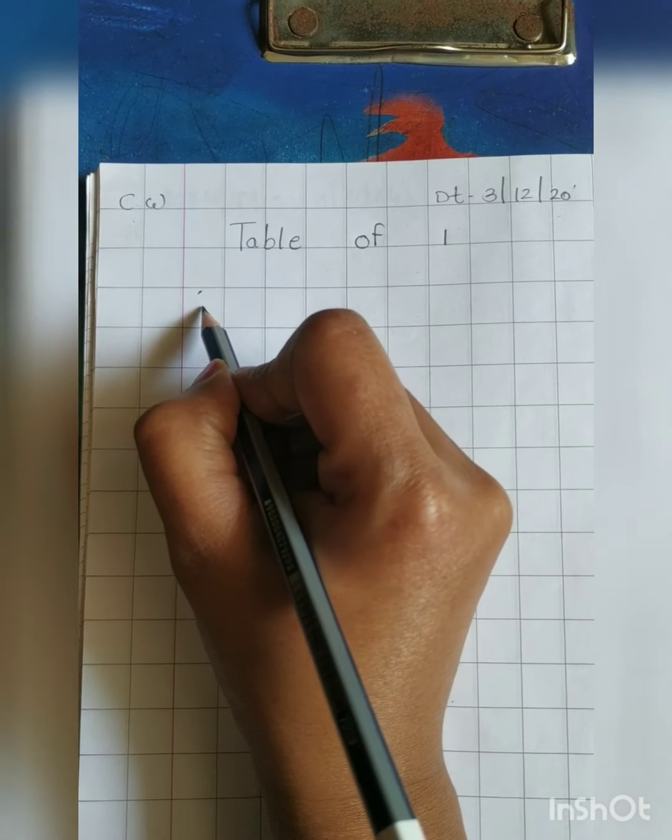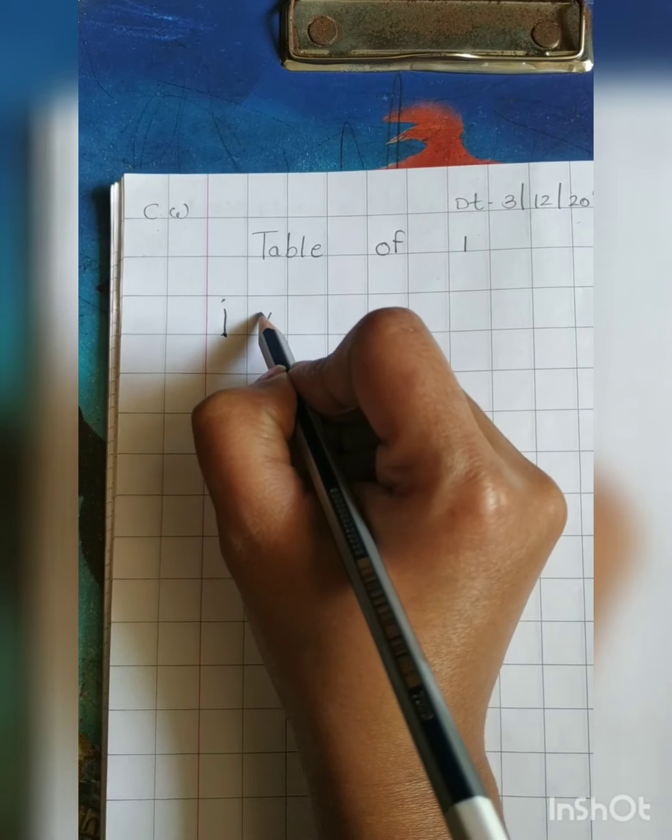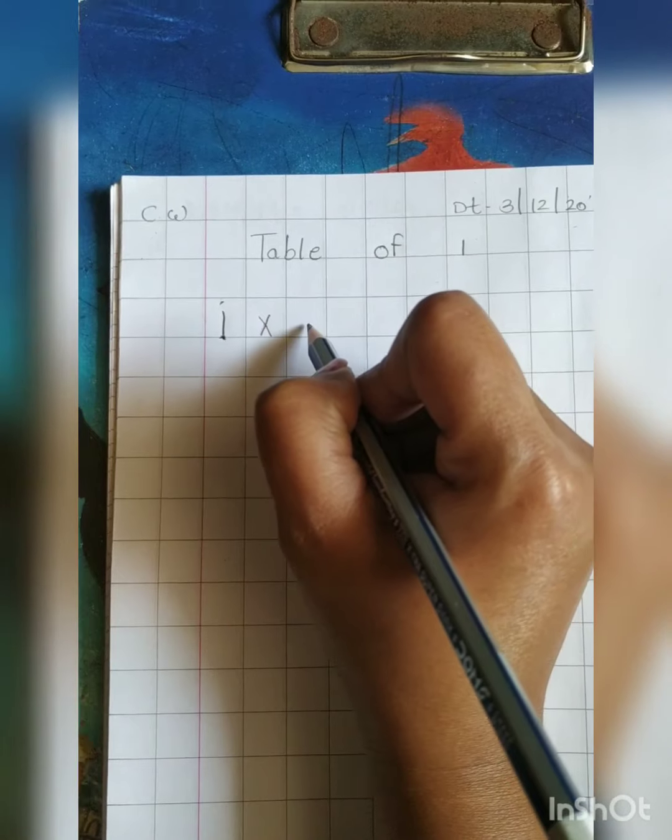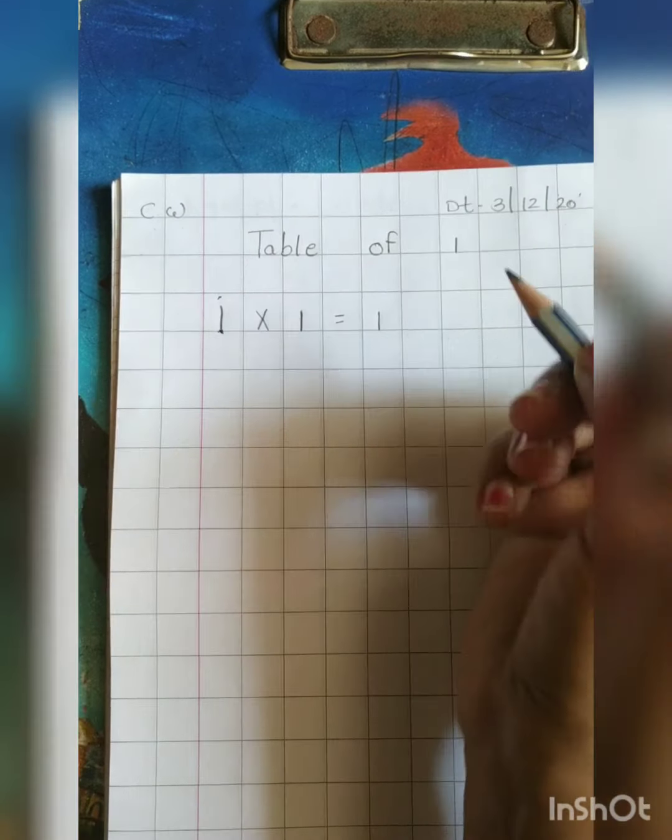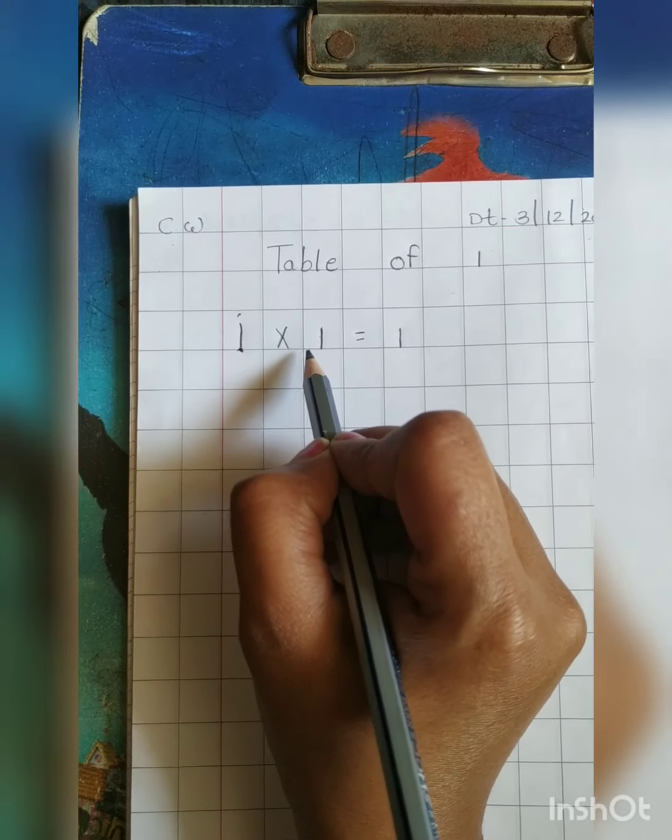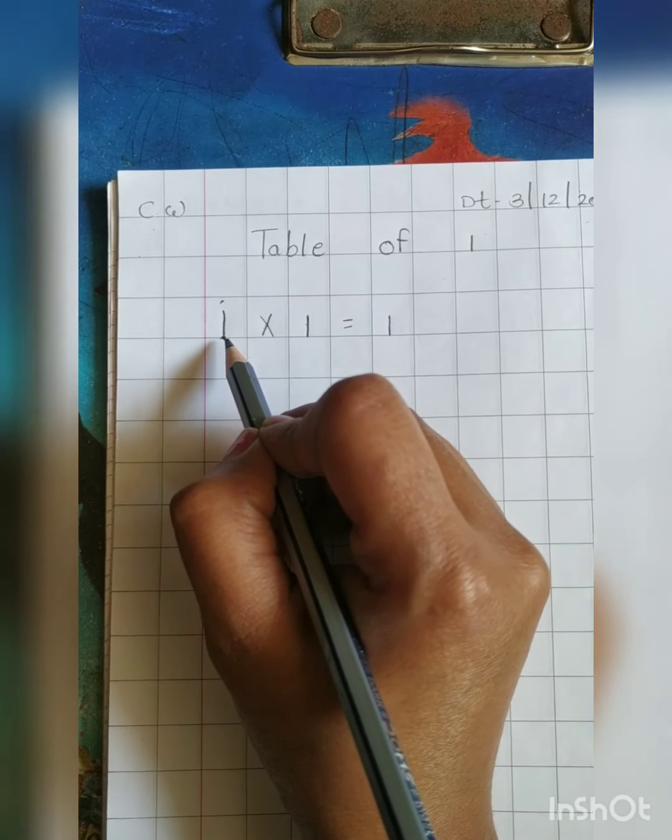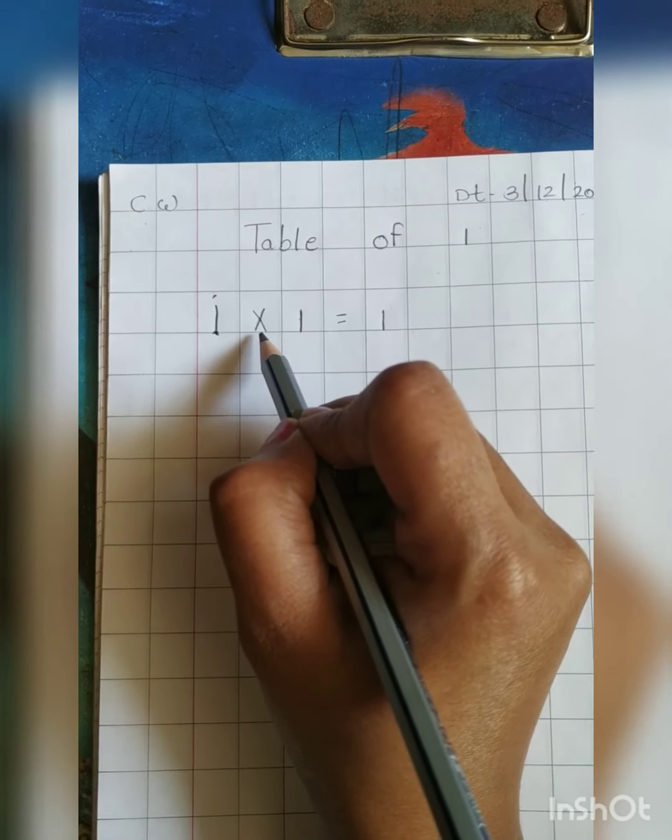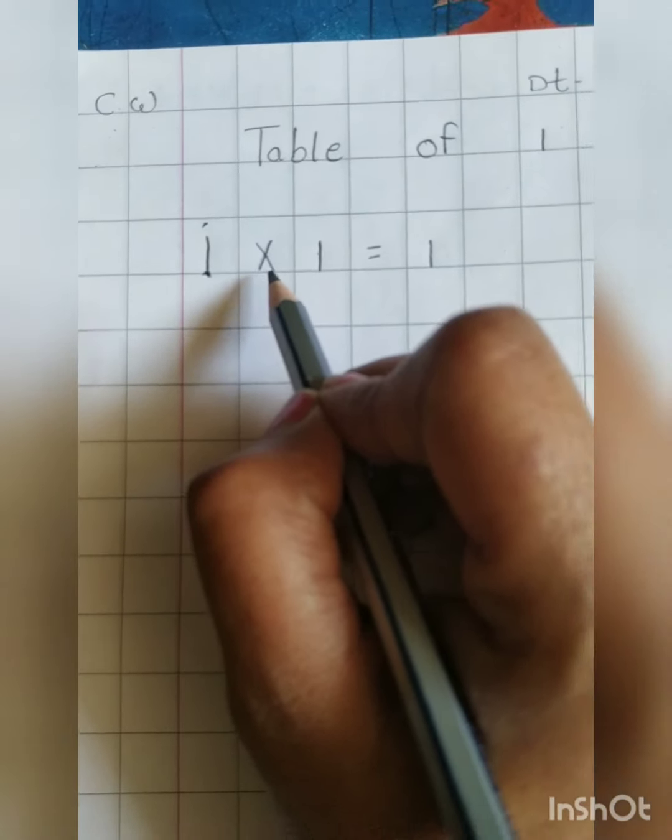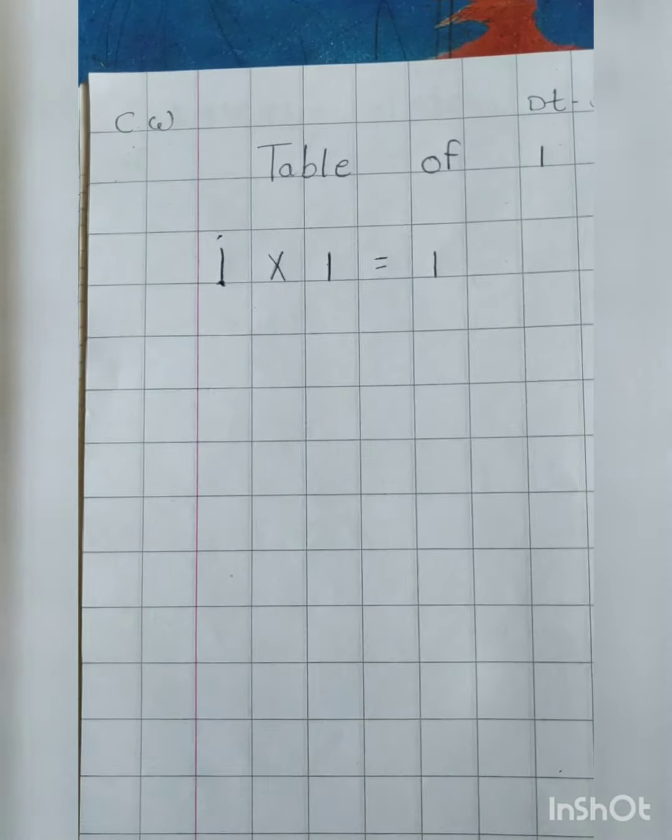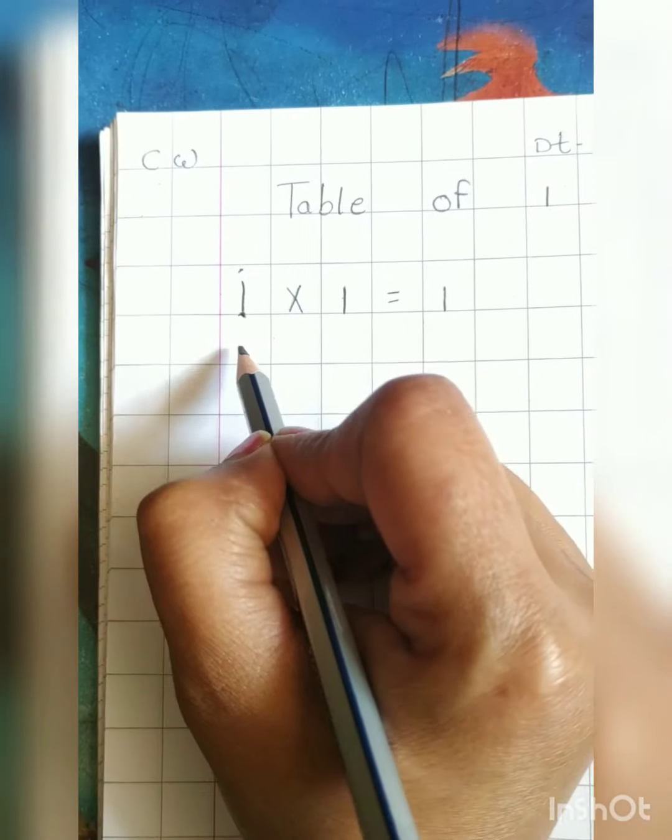First write 1. 1 times 1 is 1. It is called 1 ones are 1. First you have to write 1 and cross like X in the other box, and then again 1 equal to 1.